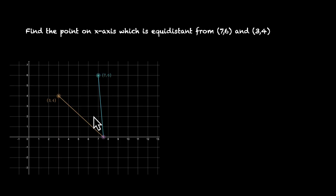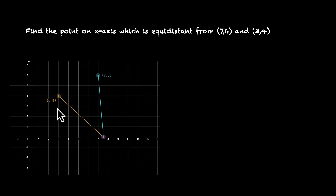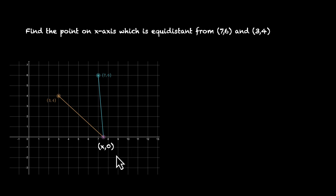Let's do this together. Here are the two points: (3, 4) and (7, 6). The point we need to find is on the x-axis. If it's far to the right, it will be closer to (7, 6) and further from (3, 4). If we move far to the left, we'll be closer to (3, 4) and away from (7, 6). So it seems like it's somewhere in between. To know exactly where, we'll use the distance formula. We can assume the coordinates of this point are (x, 0) — the x-coordinate is unknown but the y-coordinate must be 0 because we're on the x-axis.